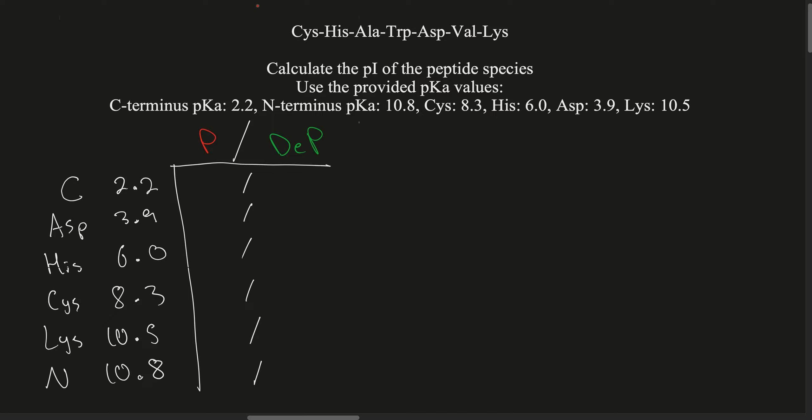When protonated, the C-terminus, which is a carboxyl group, is going to have a zero charge; when deprotonated, it's going to have a negative one charge. Same thing with aspartic acid — negative one when deprotonated, zero when protonated. Histidine has a positive one charge when protonated but zero when deprotonated. Cysteine has a zero charge when protonated but negative one when deprotonated. Lysine and the N-terminus are both positive one when protonated and zero when deprotonated.